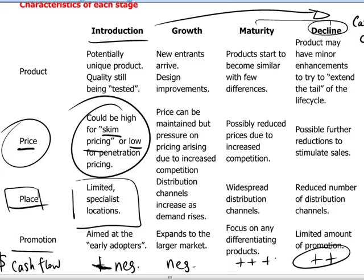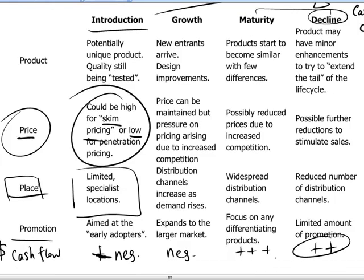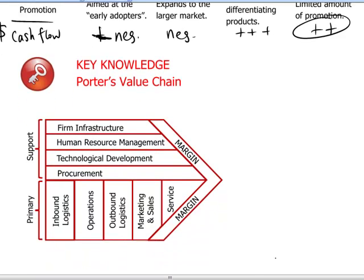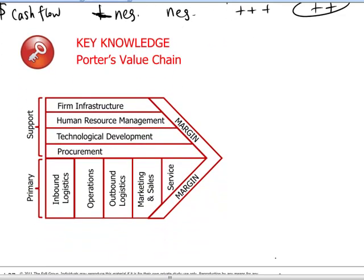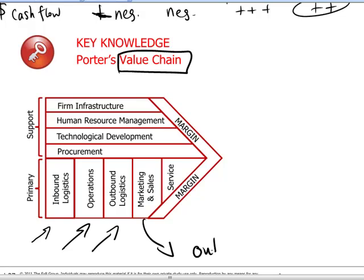There are many ways in which we can look at the product in terms of its different stages. Porter's value chain is another great favorite in terms of looking at the operations in a company and understanding at each step of the way whether value is being created, or whether it's better to outsource certain elements of production.